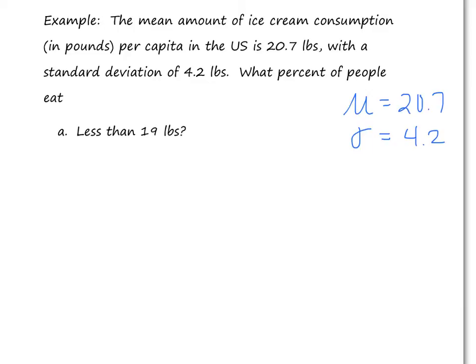So after that, the first thing I want to do, what percent of people eat for Part A less than 19 pounds? So I'm really looking for the percent of people is really just another way of saying what's the probability that I'm going to randomly pick a person and they're going to have eaten less than 19 pounds per year. So I'm really looking for this, the probability that X is going to be, the amount of ice cream is going to be less than 19 pounds for that person that I pick.